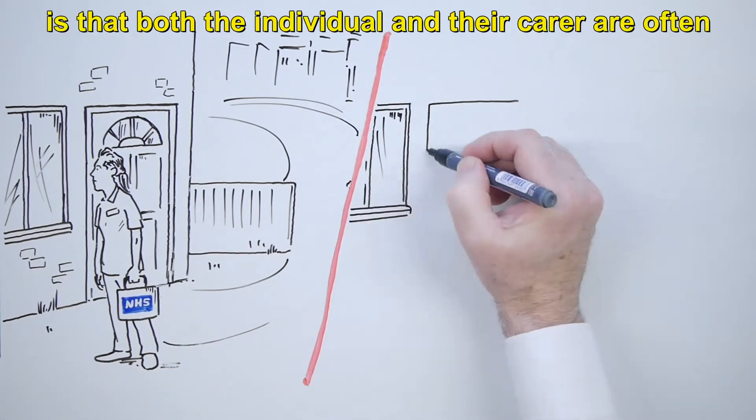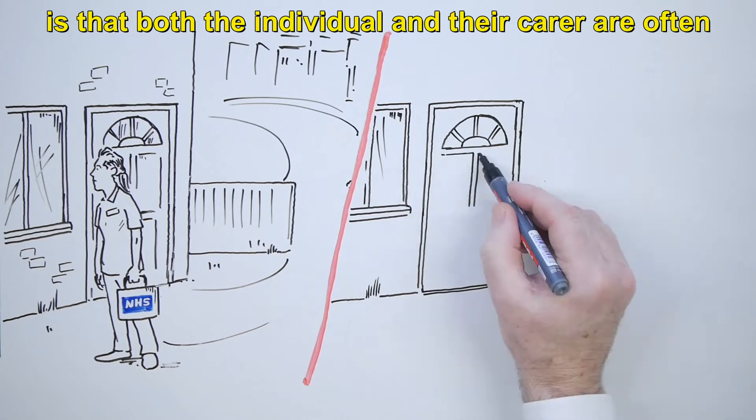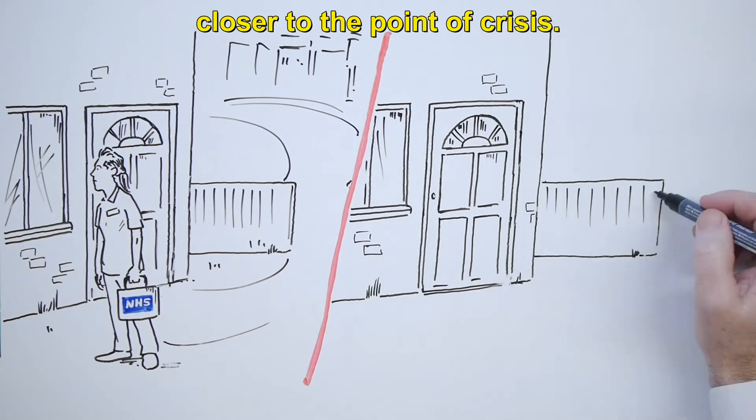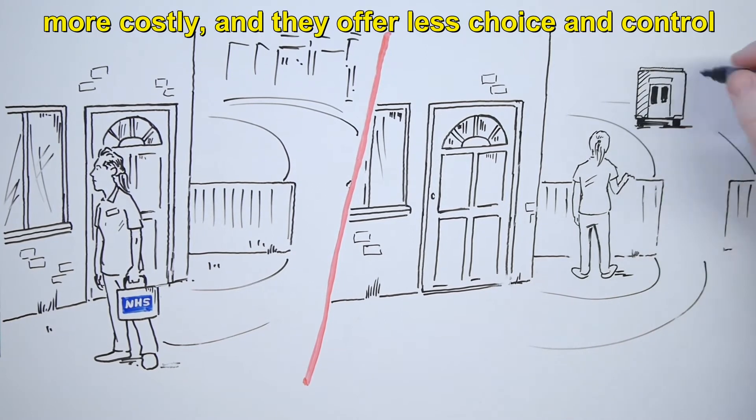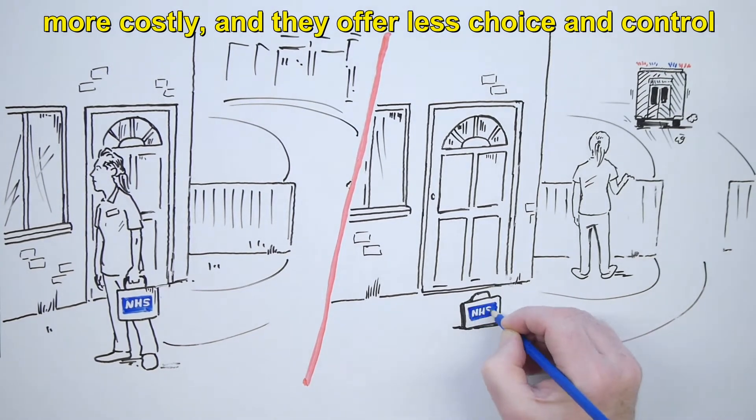The problem with a reactive approach is that both the individual and their carer are often closer to the point of crisis. At this late stage, interventions are more limited, more costly, and they offer less choice and control for the individual.